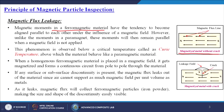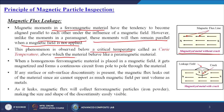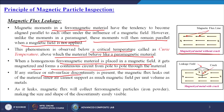Unlike the moments in a paramagnet, these moments will remain parallel even when a magnetic field is not applied to the material. This phenomenon is observed below a critical temperature, generally called the Curie temperature, above which the material behaves like a paramagnetic material. When a homogeneous ferromagnetic material is placed in a magnetic field, it gets magnetized and forms a continuous circuit from pole to pole through the material — that is, from north pole to south pole.